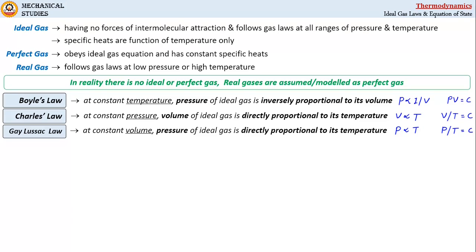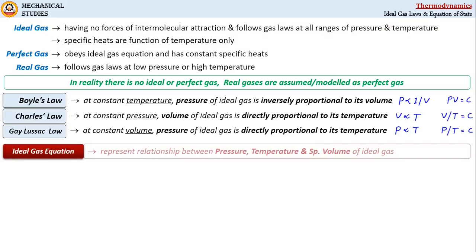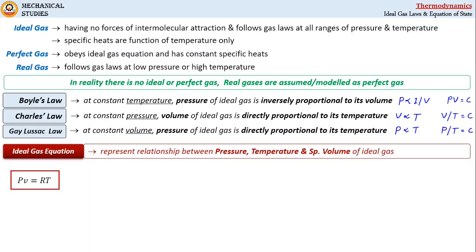From these three laws we get the ideal gas equation, which is also called the equation of state. It simply represents the relationship between pressure, temperature, and specific volume of an ideal gas. The ideal gas equation is pv = RT, where p is pressure, small v is specific volume, T is temperature of the gas, and R is the characteristic gas constant.